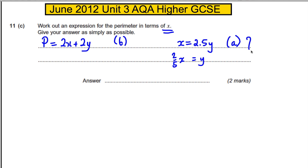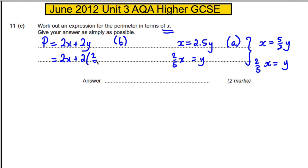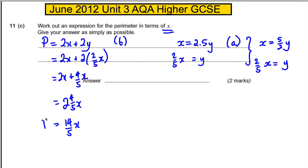Let me state that again clearly: X = 2.5Y is the same as X = 5/2 × Y. Making Y the subject, we divide by 5/2, which is the same as multiplying by 2/5, so Y = 2/5 X. We replace Y in the perimeter: 2X + 2 × (2/5 X) = 2X + 4/5 X = 2 and 4/5 X = 14/5 X. That is the perimeter.